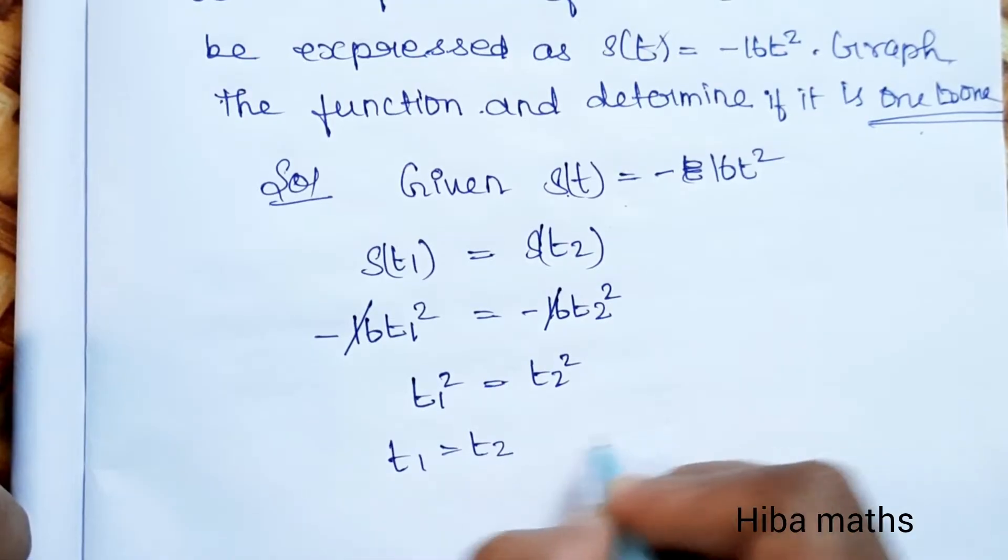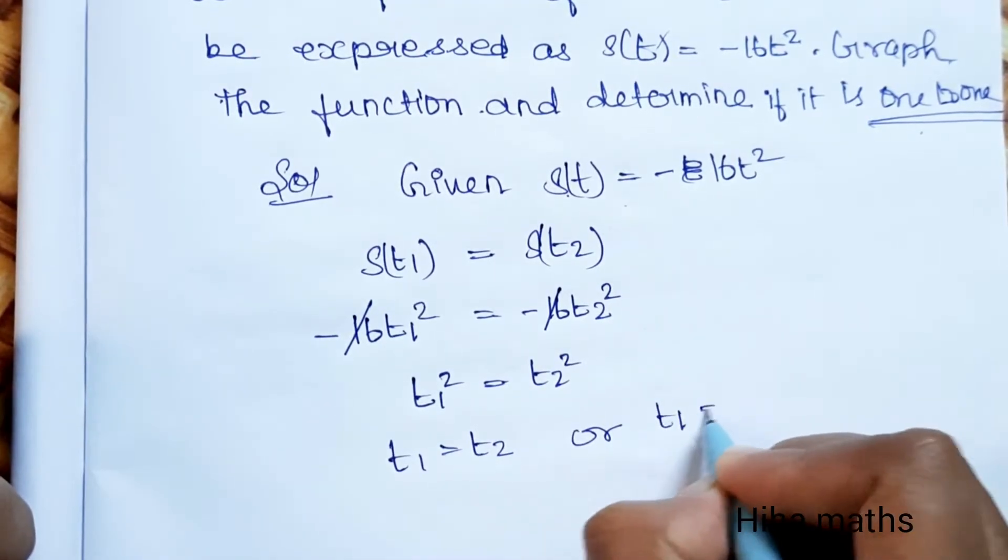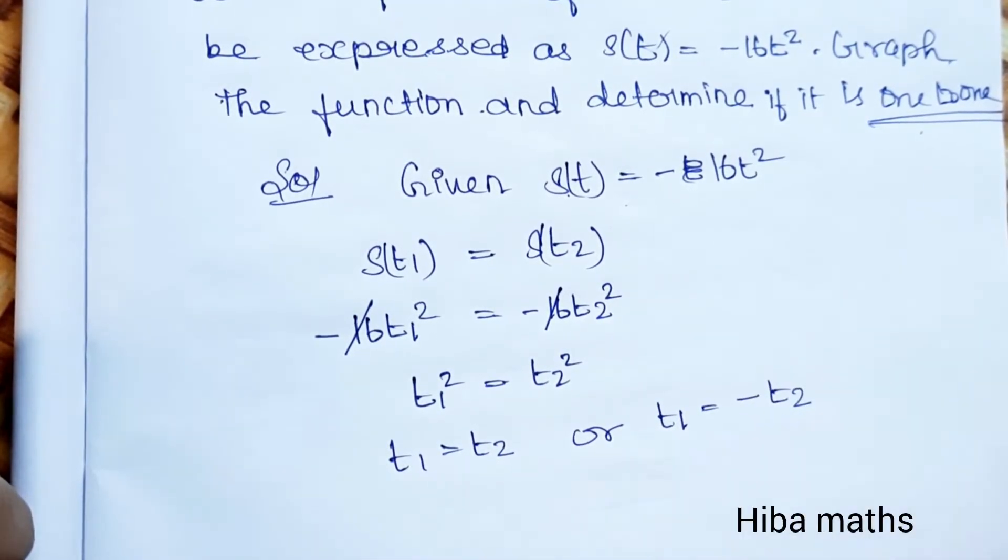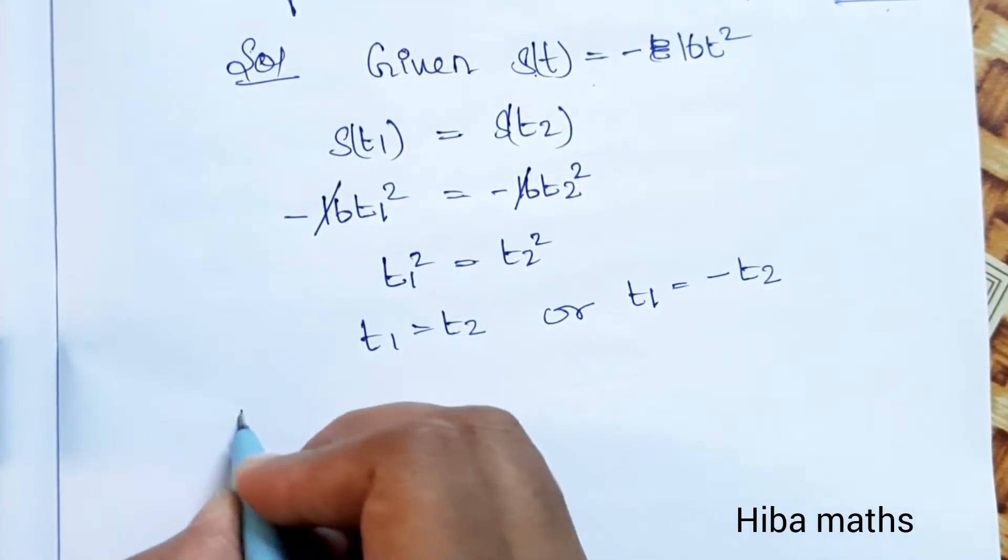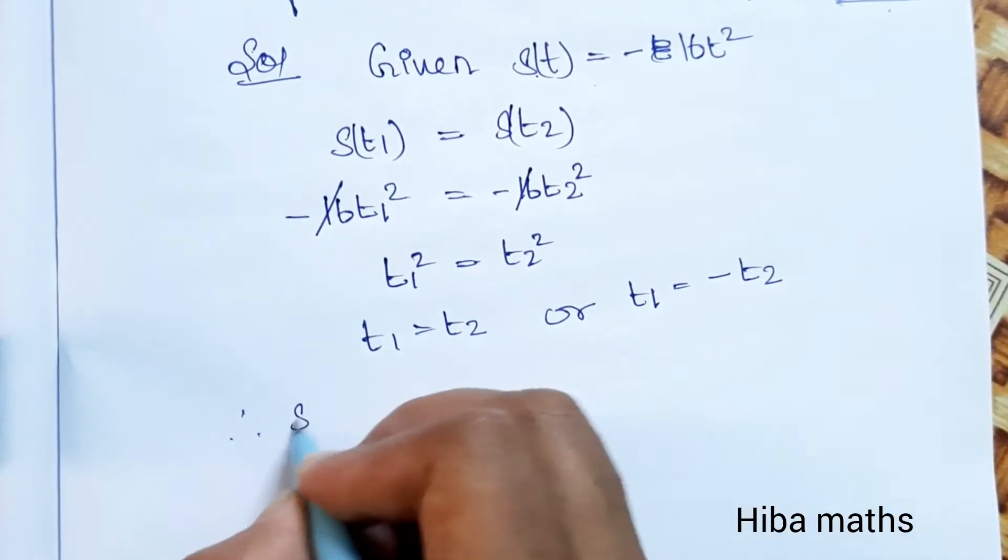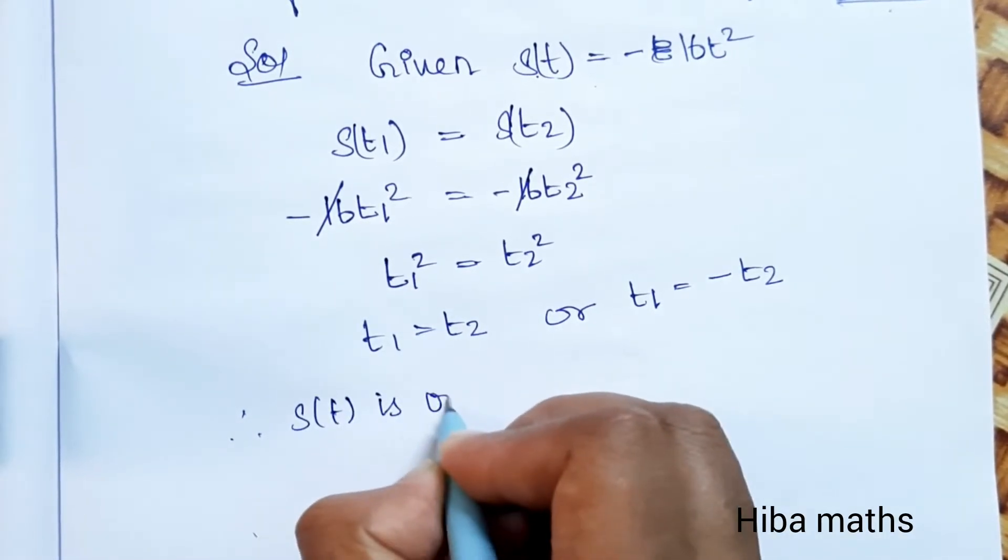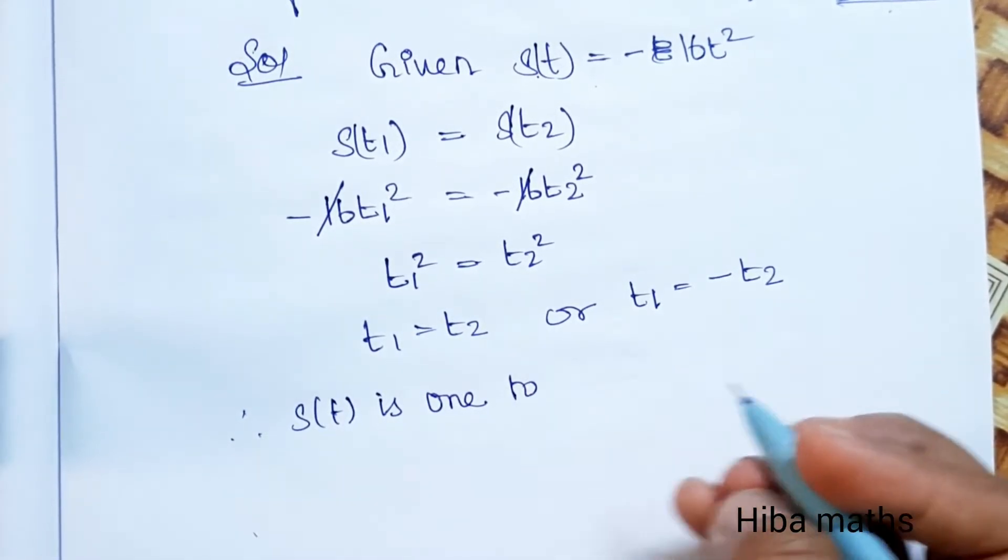From t1² = t2², we have t1 = t2 or t1 = -t2. Since we have negative and positive time, but in reality time is positive, therefore s(t) is one-to-one.